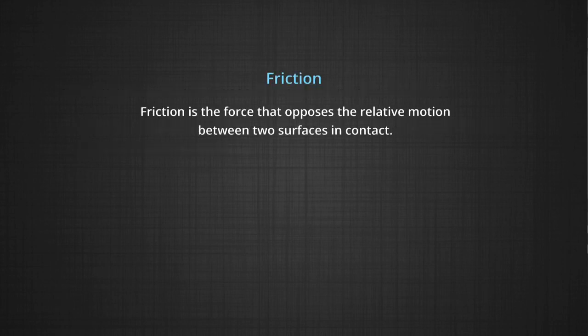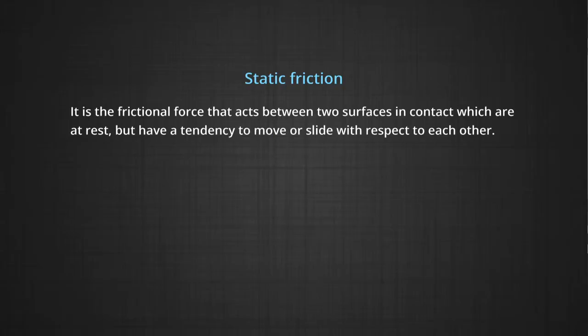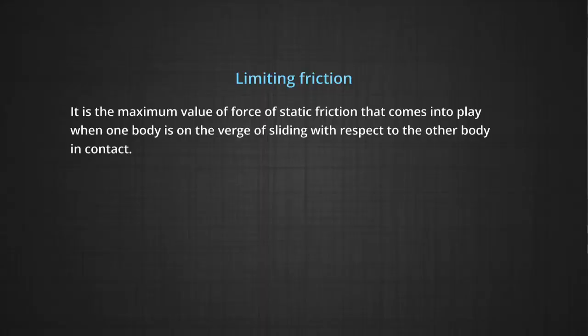Friction is the tendency to oppose the relative motion between two surfaces in contact. Static friction is the frictional force acting between two solid surfaces in contact at rest but having a tendency to move or slide with respect to each other. Limiting friction is the maximum value of the force of static friction, when one body is on the verge of sliding with respect to the other body in contact.